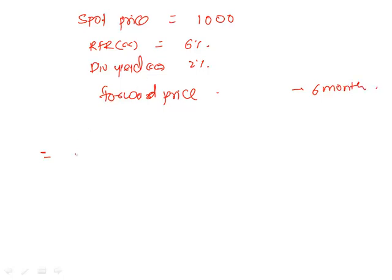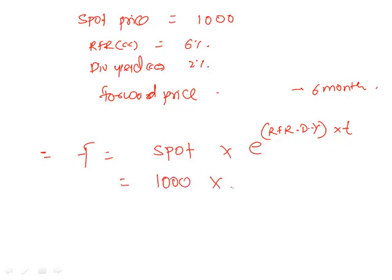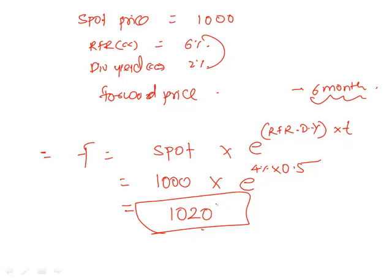Then how you would find forward price? You will say forward equals spot times e raised to whatever is your RFR minus the dividend yield multiplied with the time period t. In this case spot price is going to be 1000 times e raised to difference of these two is 4% and since the maturity is 6 months that would be times 0.5 which would give us a forward price of 1020. Are we okay with this concept?